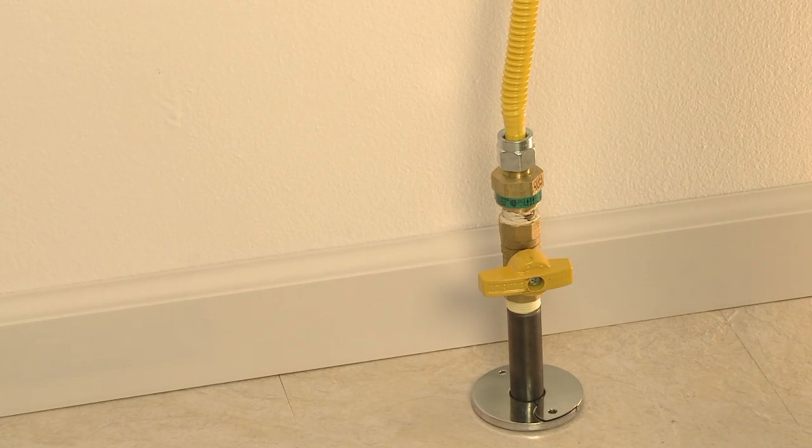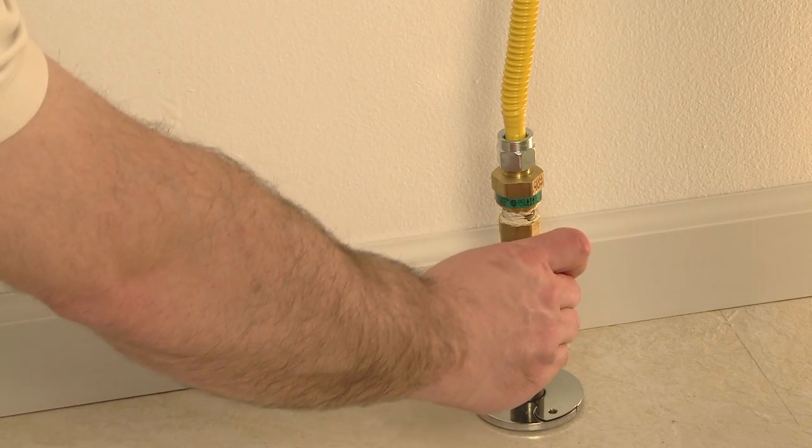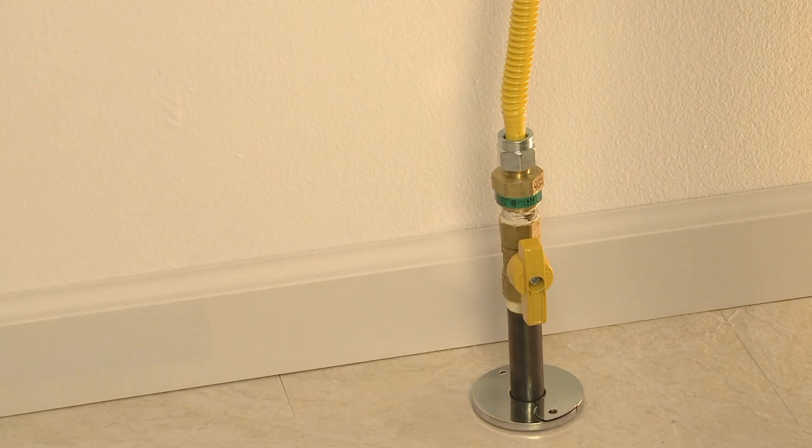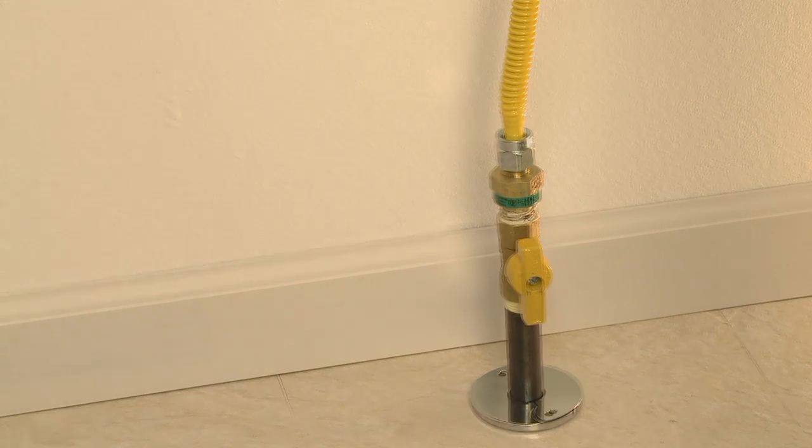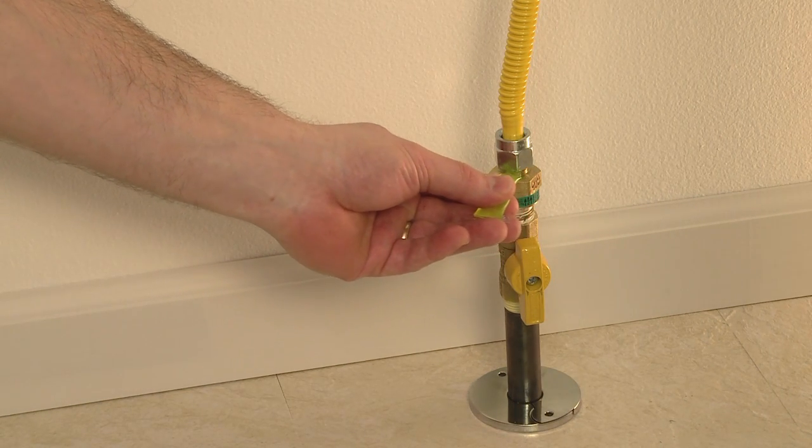It is important to check for leaks at this point. Slowly turn the gas shutoff valve back on by rotating the handle so that the handle lines up with the gas line. Place a generous amount of leak detection solution on all threaded connections.